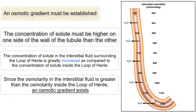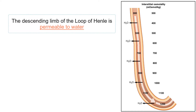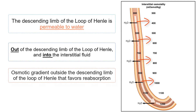Since the osmolarity in the interstitial fluid is greater than the osmolarity inside the loop of Henle, an osmotic gradient exists. It is crucial to ensure the osmolarity in the interstitial fluid is higher than in the descending limb of the loop of Henle, as it is the descending limb that is permeable to water. Therefore, by establishing an osmotic gradient with a higher solute concentration immediately outside the descending limb, water will diffuse out of the descending limb and into the interstitial fluid. The key is to have an osmotic gradient outside the descending limb that favors reabsorption.